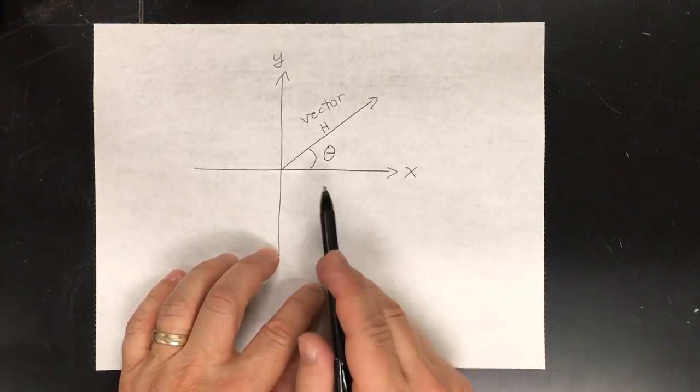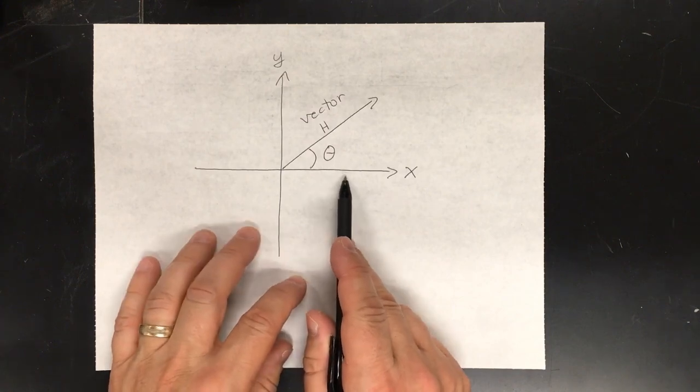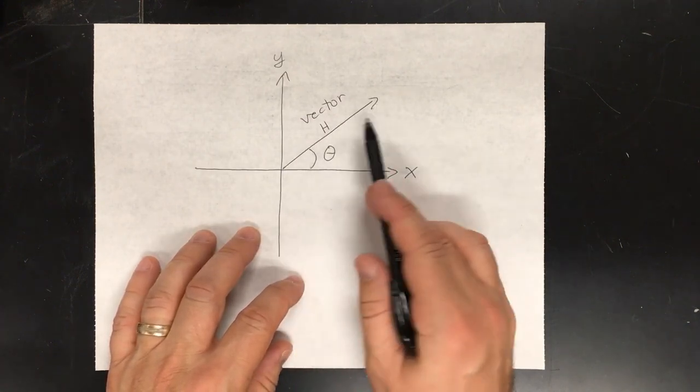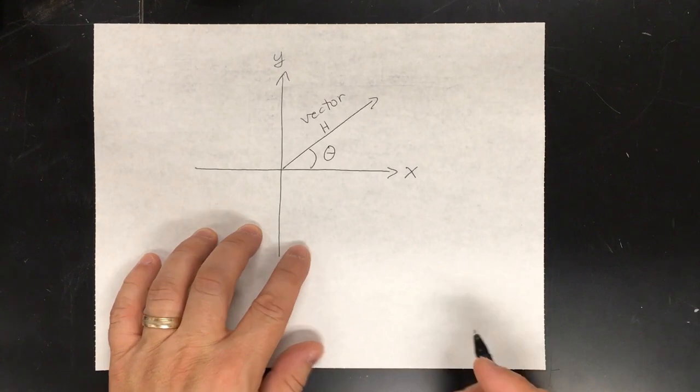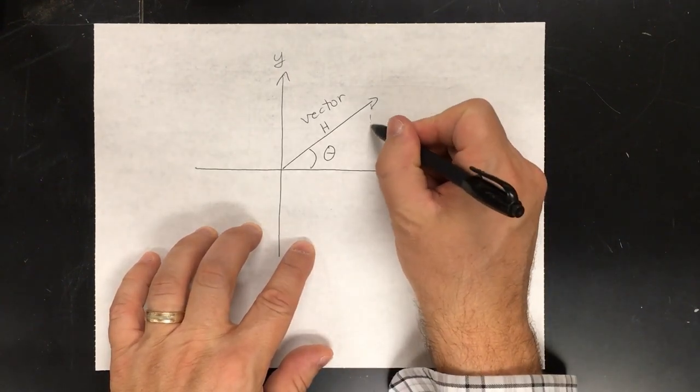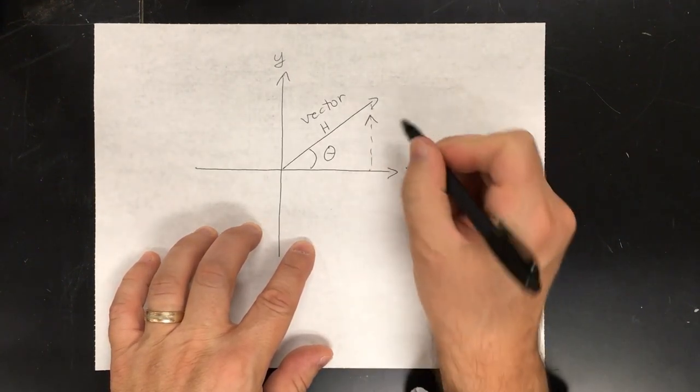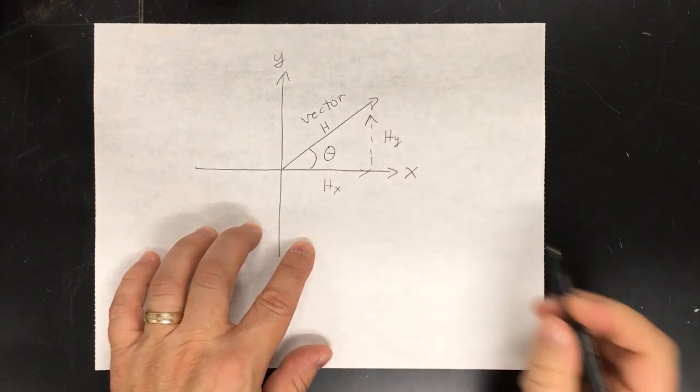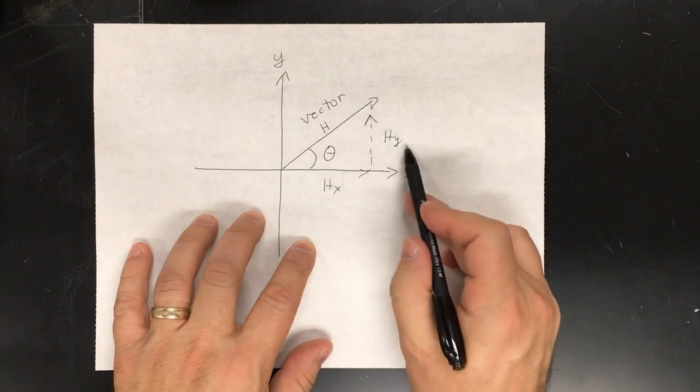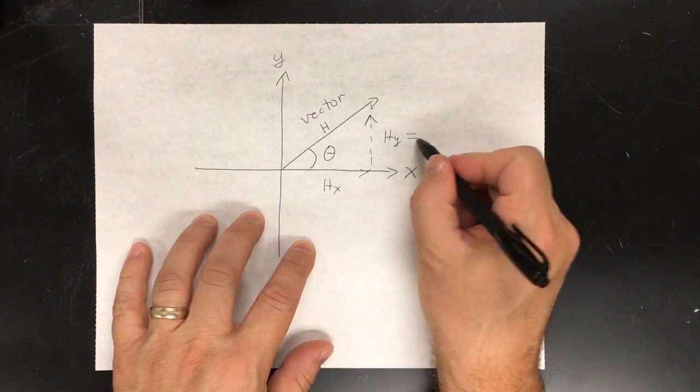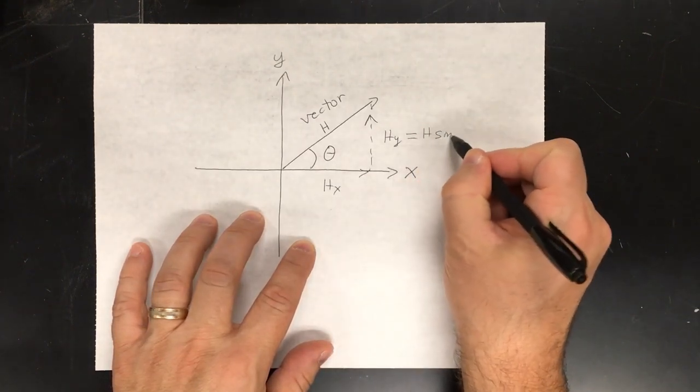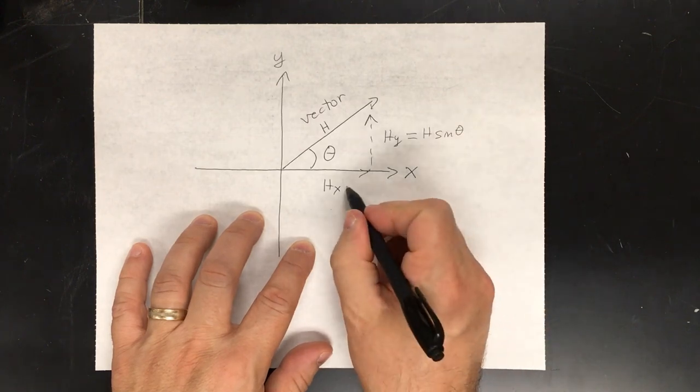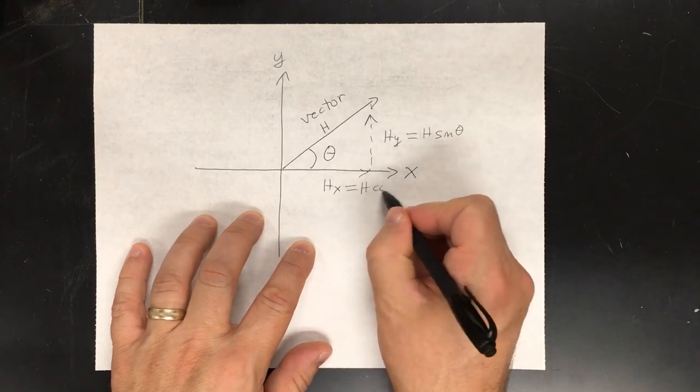First, some basic trigonometry. If this is our angle from the x-axis and this is our vector that has a size of h, and I picked h just for the hypotenuse. Then, let's go ahead and make our vector components. There would be h in the y-direction. There would be h in the x-direction. Notice in the y-direction, that's opposite. So, this would be h sine theta and in the x-direction would be h cosine theta.